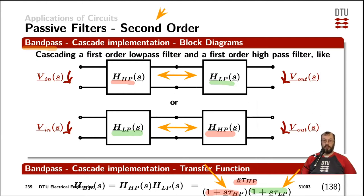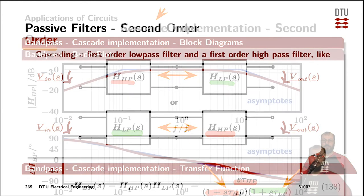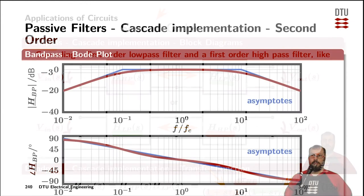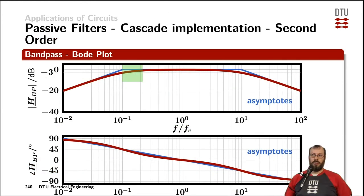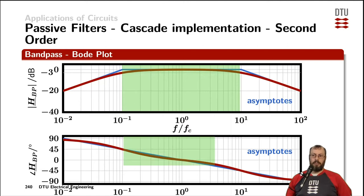This is one way of creating a bandpass, and we will also have a look at how to create a bandpass a different way. Now for the Bode plot of that bandpass, we have the passband in the middle, both for the amplitude and for the phase.